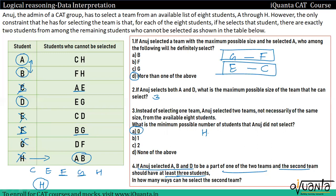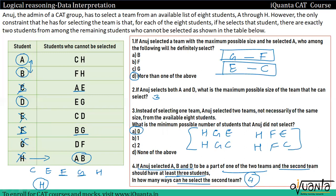G और F में से किसी एक को select कर पाऊंगा, और E और C में से किसी एक को select कर पाऊंगा। तो possibilities हैं: H, G, E — H, G, C — H, F, E — and H, F, C। Means हमारे पास 4 cases आ रहे हैं। In how many ways can he select the second team? Answer 4 है। So guys, यहाँ पर हमारा set complete होता है। Selection based set था, team select करना पड़ रहा था। आपने approach देखी होगी कि इस type के set को कैसे approach कर सकते हैं। Thank you guys and happy learning।